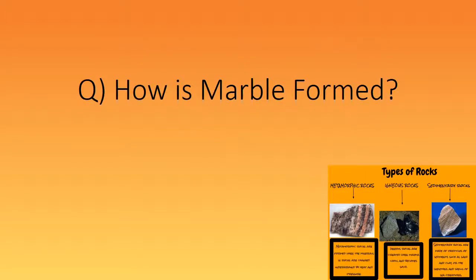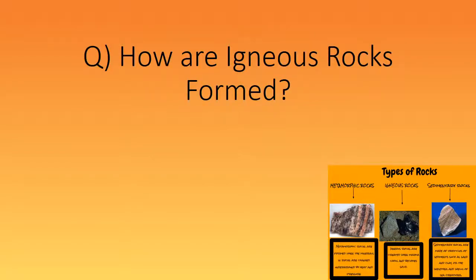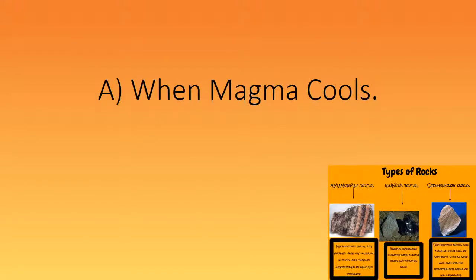How is marble formed? High temperature and pressure breaks down the limestone and it reforms as small crystals. How are igneous rocks formed? When magma cools.